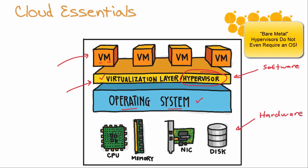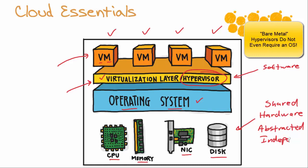What type of hardware are we dealing with? We're talking about shared hardware. We have this physical disk, we have this NIC, this memory, this CPU, and it is being shared by each of the virtual machines that we're creating on top of it. We like to also refer to this hardware as abstracted or independent hardware. This means that these physical hardware resources are not tied directly to the server that's running on them anymore, thanks to the software layers that exist in between.